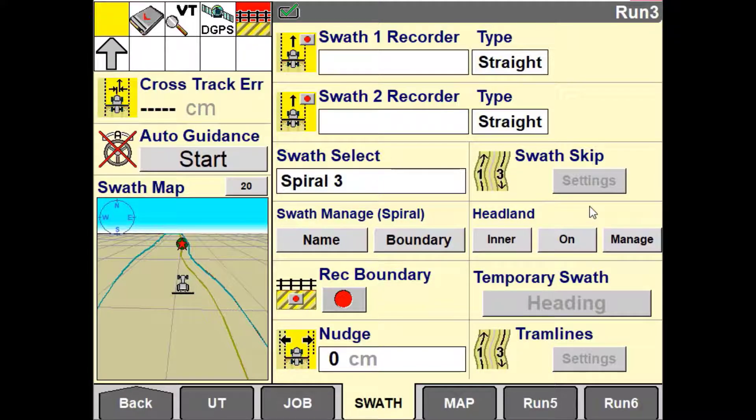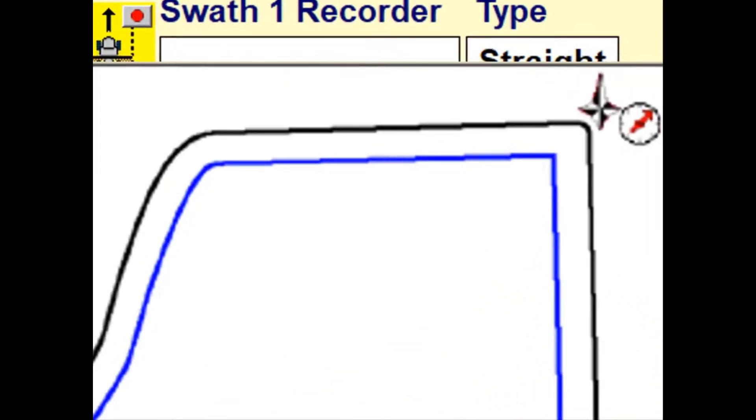With this option enabled you will have the ability to define whether you want the headland to operate in the inner or outer mode. Selecting outer means that product will be applied in the outer area of the headland and sections will be turned off when the implement passes across into the inner area of the field.